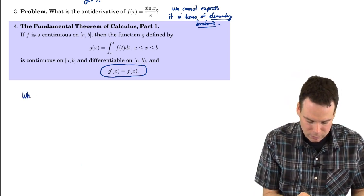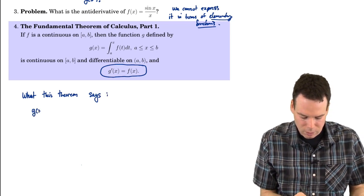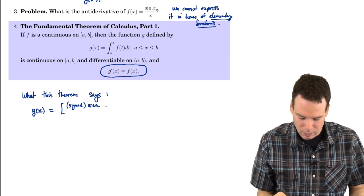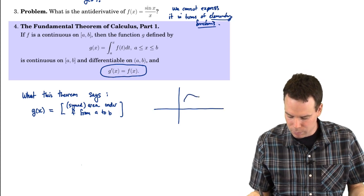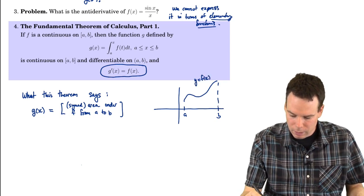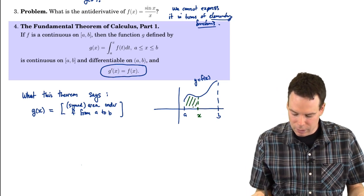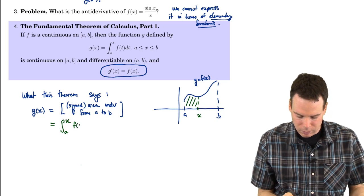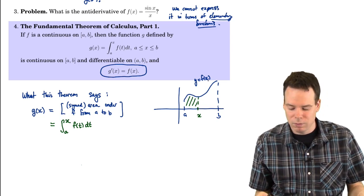So let's write down what this theorem says. We define the function g as the signed area under f from a to x: g(x) equals the integral from a to x of f(t) dt. Some students are bothered by the fact that even though g looks like a function of x, we're using t inside the integral — why are we using t in here?